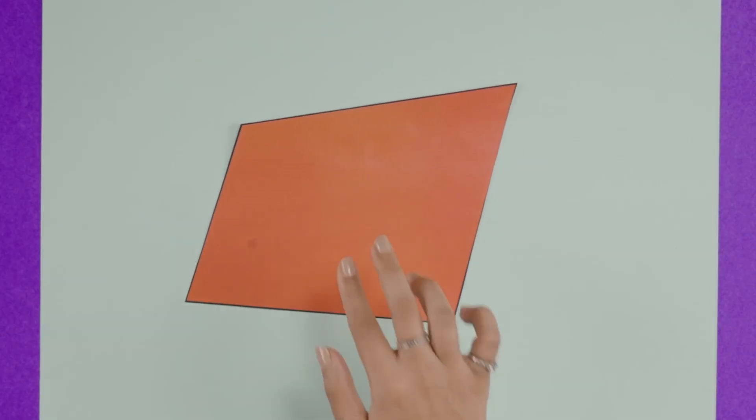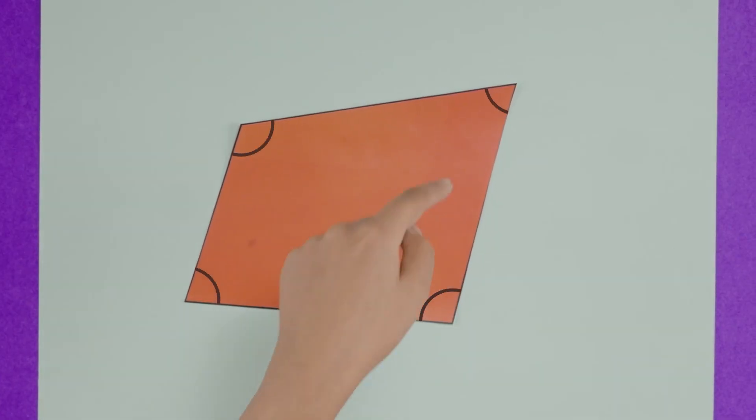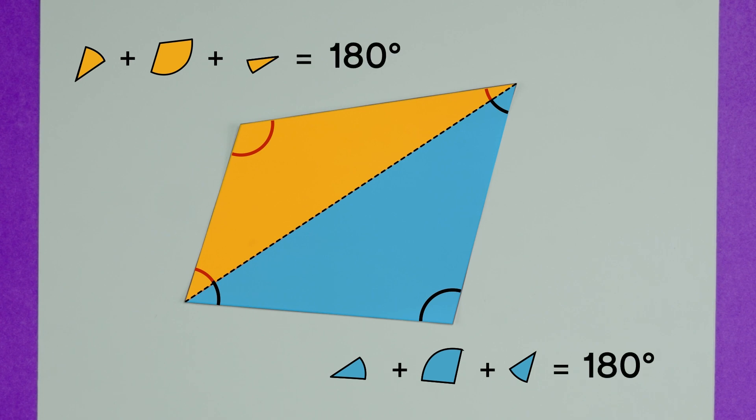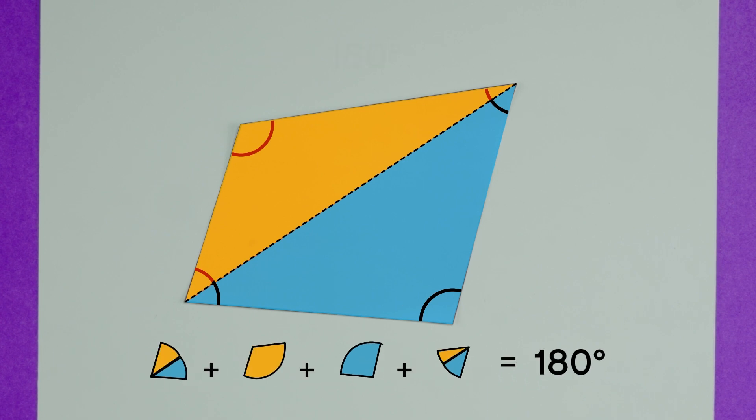Now let's use this to find the sum of interior angles of other polygons. Here's a quadrilateral with its four angles. We can divide it into two triangles like this. These two angles get divided into smaller angles. Now the three angles of each triangle must add up to 180 degrees. That's a total of two times 180 degrees, or 360 degrees. So all four angles add up to 360 degrees.